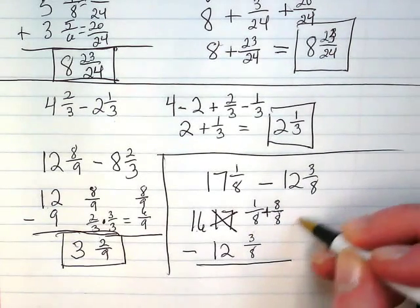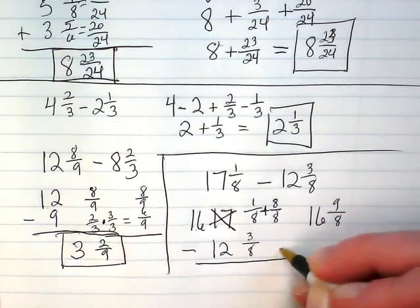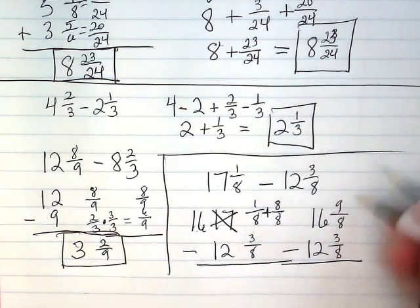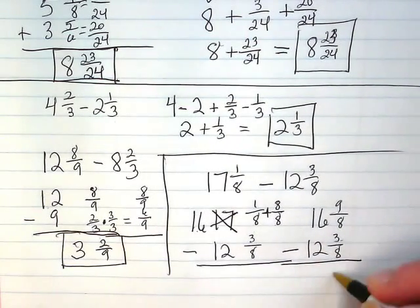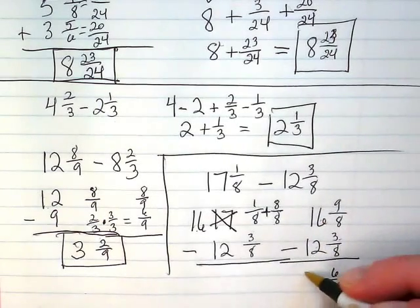So now I'm going to rewrite my whole problem as 16 and 9 eighths minus 12 and 3 eighths. 9 minus 3 is 6 over 8. 16 minus 12 is 4.